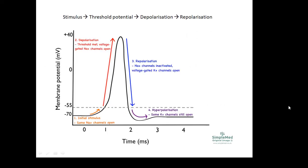This is the graph — a bit more detailed than before. We start at minus 70. An initial stimulus causes some of the sodium channels to open. If the stimulus is bigger than the threshold voltage, all of the channels open and loads of sodium ions rush in — that's depolarization. Then the sodium channels are inactivated, the potassium channels open up, and the voltage goes all the way down to minus 90 millivolts. Then the pumps do their job: they put the sodium ions back and the potassium ions back, and we return to the start.